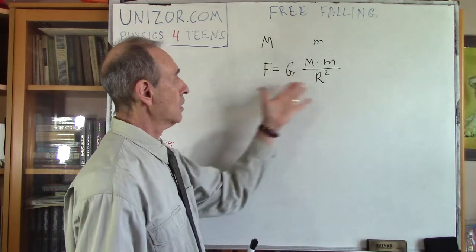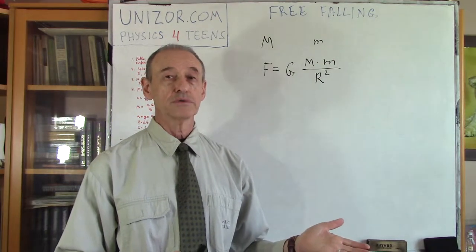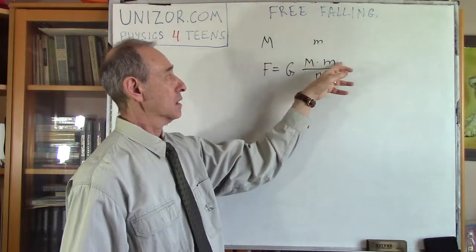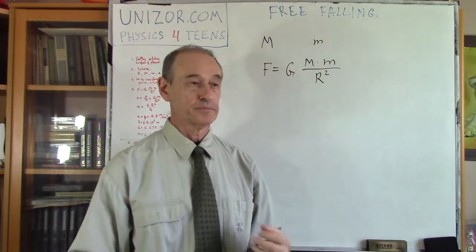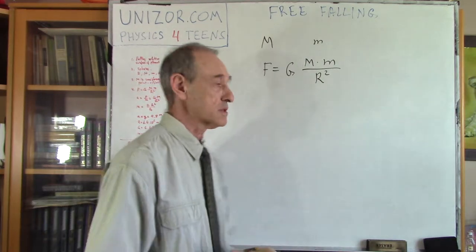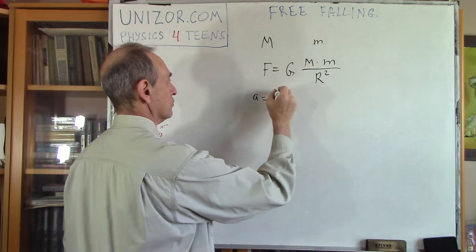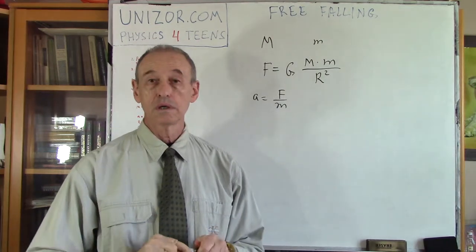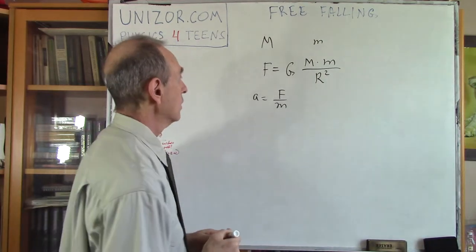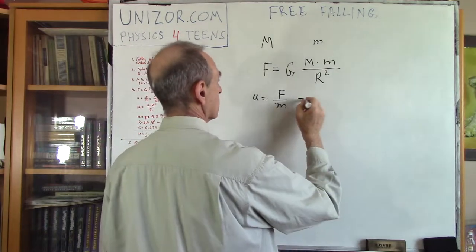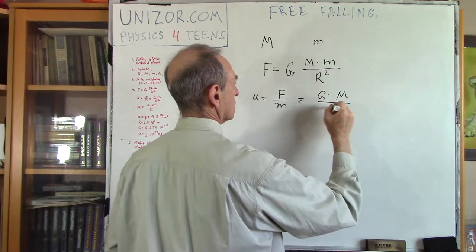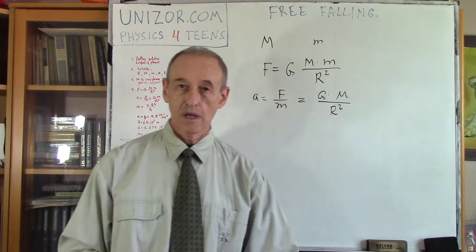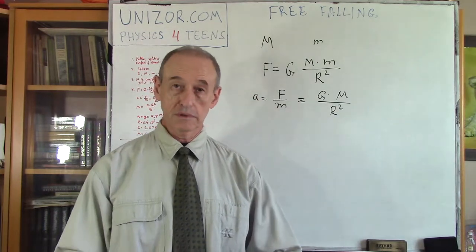So we know how the force is expressed — the force of attraction between the planet with mass M (capital M) and the object with mass m (lowercase m). What's the acceleration? Acceleration is equal to force divided by mass — this is Newton's second law — from which we can derive that acceleration equals G times M divided by R squared. So now we can determine the acceleration of the object free-falling on the surface of, let's say, Earth.